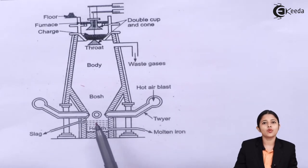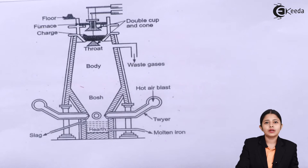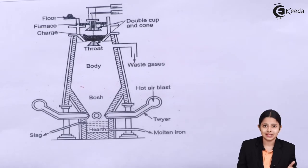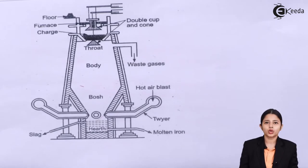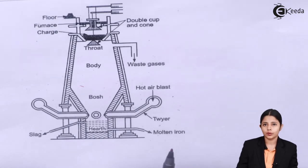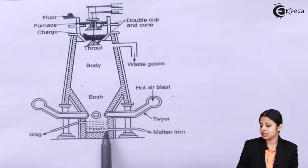At the end of all the chemical reactions, we are left with two things: the first is the molten metal and the second is slag. Both of them come down through two openings which are present in the bottom.